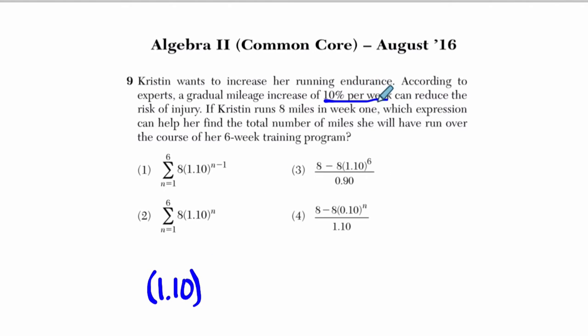So increasing 10% per week can reduce the risk of injury. She runs 8 miles in week 1. You start at 8 miles. Now there's no increase in week 1. For the first week, you start off at 8, and then you multiply that by 1.1 to the 0, because you're starting at 8. Remember that 1.1 to the 0 is just 1, so this is just 8. And I'm writing it that way so you can see the pattern here.